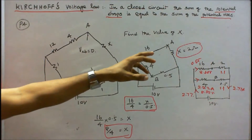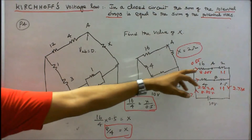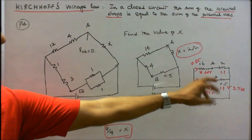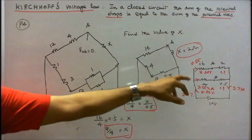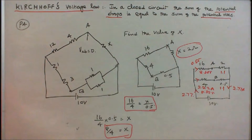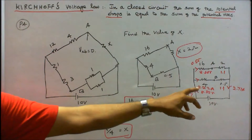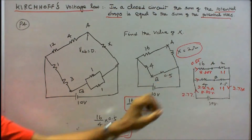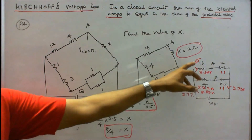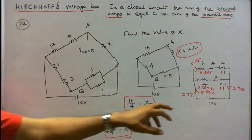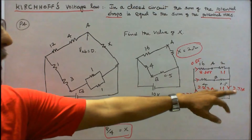Once I know X = 2 ohms, I redraw the diagram with values 16, 2, 4, and 0.5 ohms. In the parallel circuit, voltage is constant. Therefore, 10 / 4.5 = 2.22 amps, and 10 / 18 = 0.55 amps. Current towards the junction is 2.77 amps, and current leaving the junction is 2.77 amps.